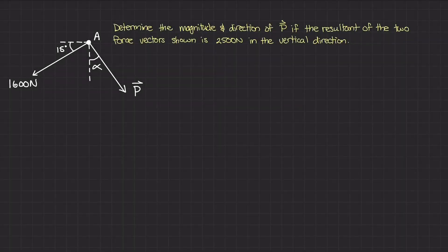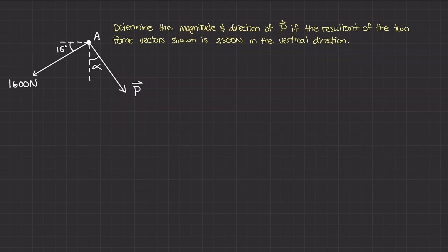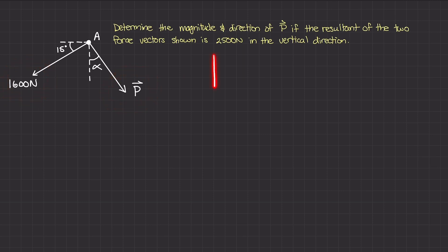In this example, we have two different force vectors acting on point A. We have this P vector acting at an angle of alpha from the vertical, and we also have this 1600 newton force vector acting at 15 degrees from the horizontal. The question asks us to determine the magnitude and direction of P if the resultant of the two force vectors is 2500 newtons in the vertical direction.